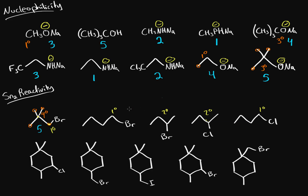The two primaries without that steric hindrance are most likely to react. What's the difference between them? The leaving group — bromine is a better leaving group than chlorine because it's further down the periodic table, it's larger, more polarizable, and can handle a negative charge better than chlorine. So the bromine compound is number one, the chlorine primary is number two, and then comparing the two secondary carbons, bromine is a better leaving group, so that's three and this is four.